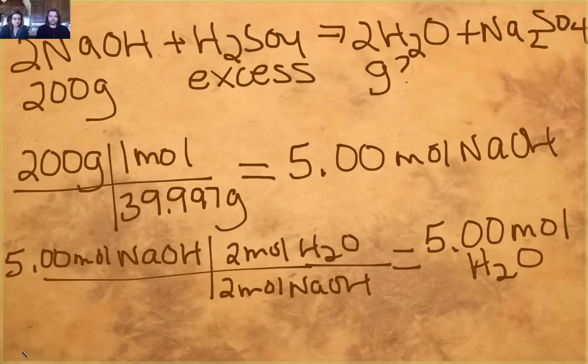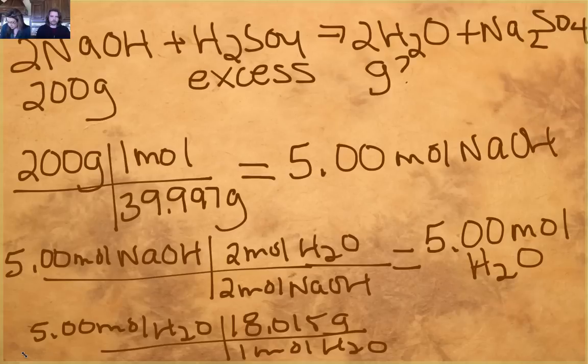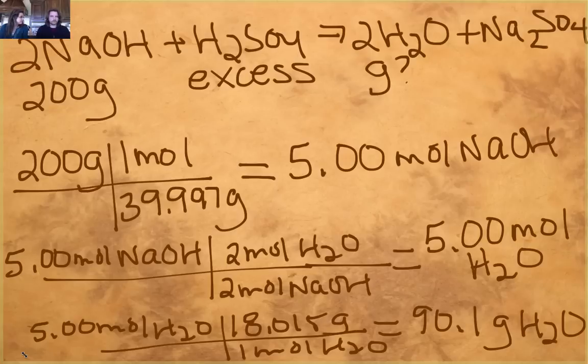Now, am I finished? I know moles of water. We got moles of water, but the question was asking for how many grams of water does that make? So we got one more step. We've got to do molar mass again, don't we? Right. Moles of water times molar mass of water. Exactly. All right. One last train track. So for every one mole of water, 18.015 grams. So I end up with 90.1 grams of water.